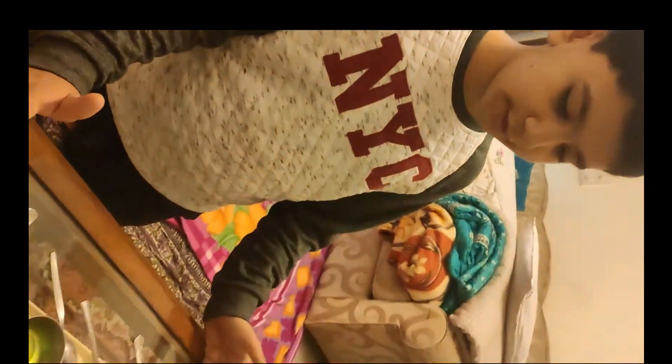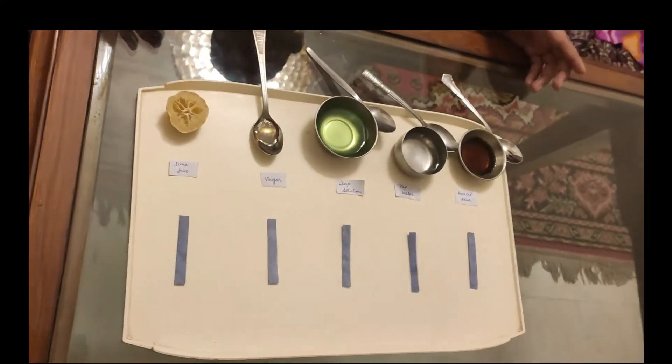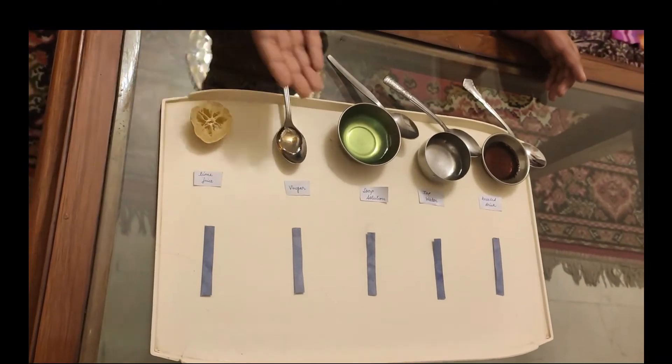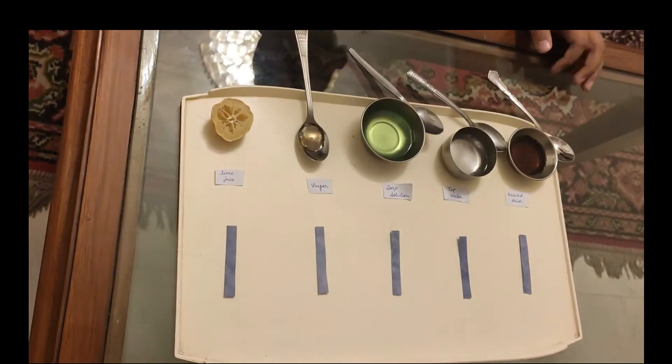Let's see what happens. Here we have a litmus test of five household items. I will pour each of these five household items one by one on these five litmus papers.